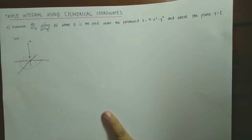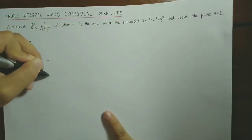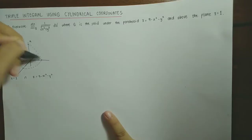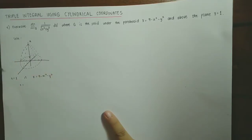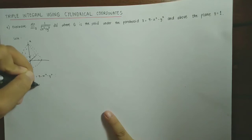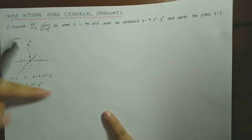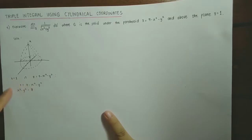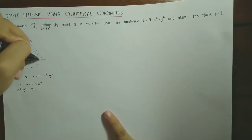Let's find the intersection of z = 1 and the paraboloid z = 9 - x² - y². Setting them equal: 1 = 9 - x² - y², so x² + y² = 8. This is a circle centered at the origin with radius 2√2. Since 2√2 is less than 3, it lies inside the larger circle.